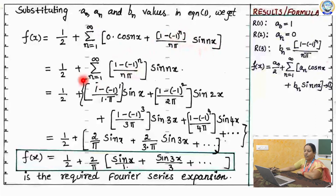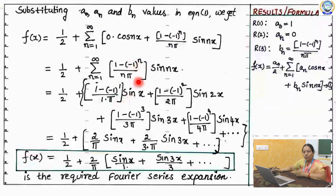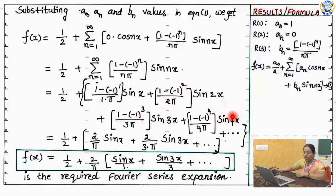After simplifying, you have to expand this summation — put n equals to 1, then n equals to 2, then n equals to 3, and so on. After simplification, you get the required Fourier series as f of x equal to 1 by 2 plus 2 by pi into sin x by 1 plus sin 3x by 3 plus so on.